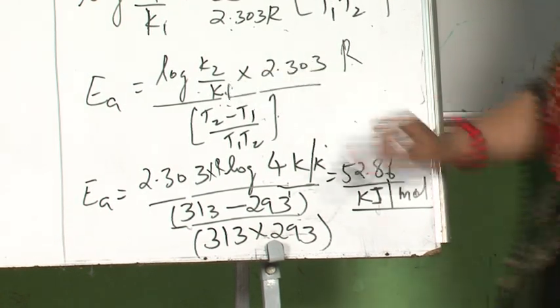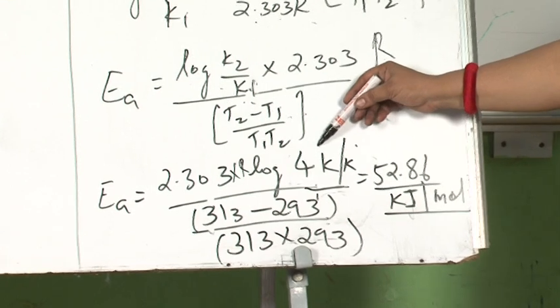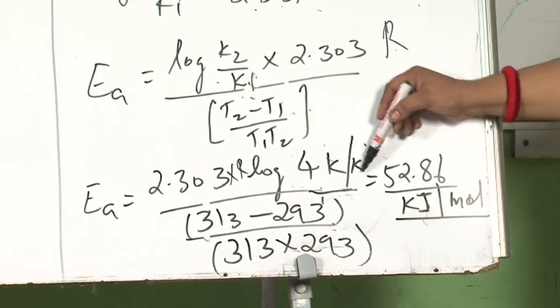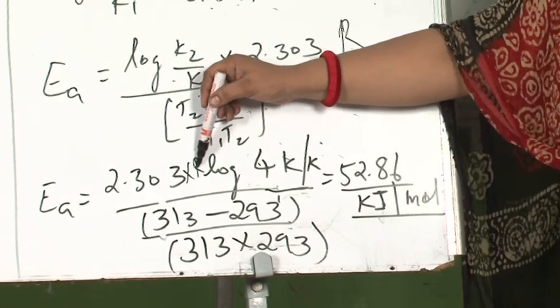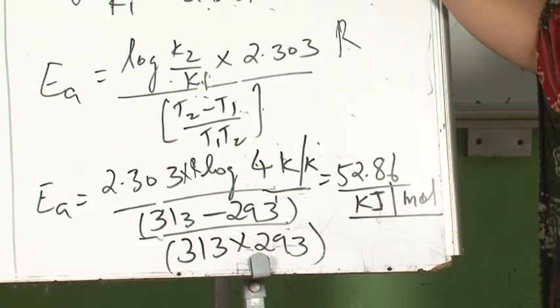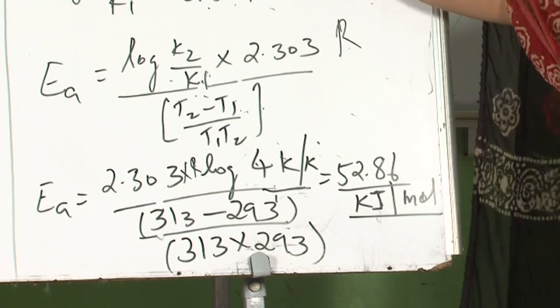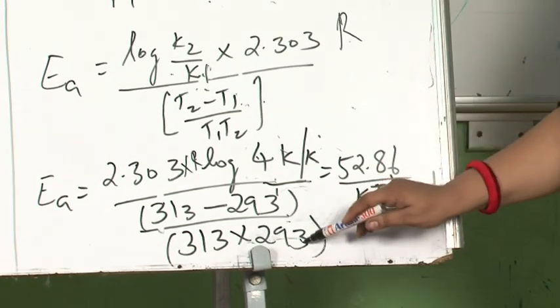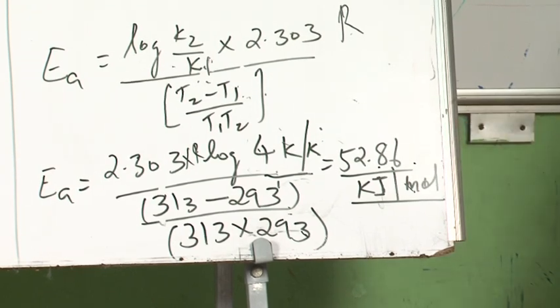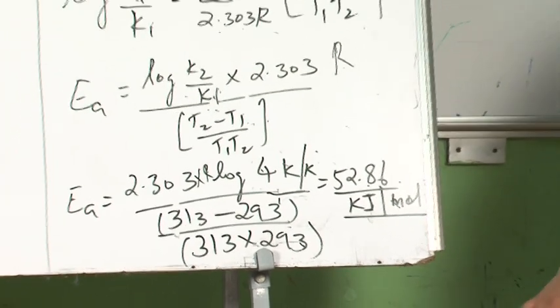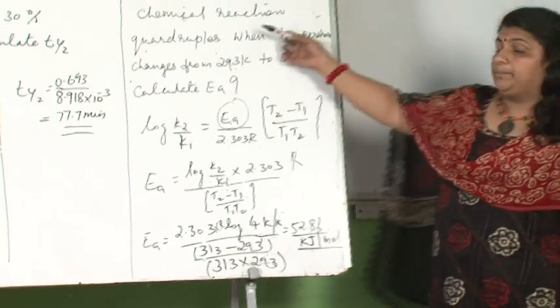k2 upon k1 is 4k upon k. The k's cancel, so it is log 4 times 2.303 times 8.314 times (313 minus 293) divided by (313 times 293). You will get a value of 58.86 kilojoule per mole for this type of question.